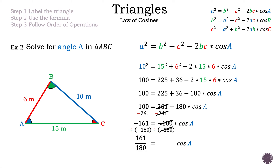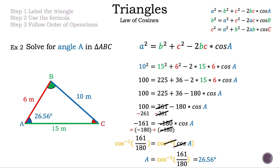We still haven't isolated A because we have cosine of A. To get rid of cosine, we apply the inverse — cosine inverse — which cancels cosine. So A = cos⁻¹(161/180). Using a calculator, the result is approximately 26.56 degrees. That is angle A, and that is our answer for example 2.